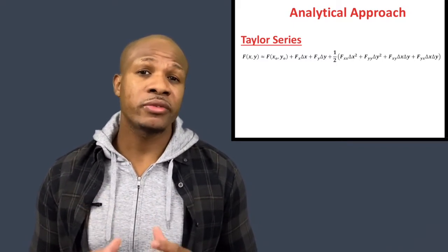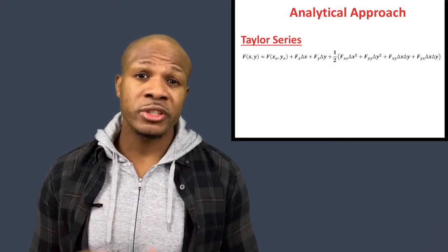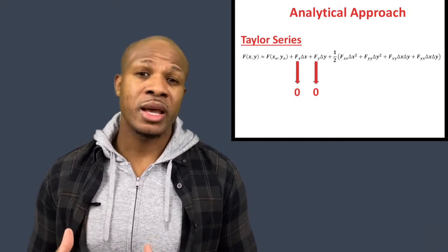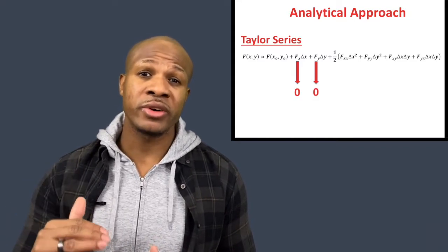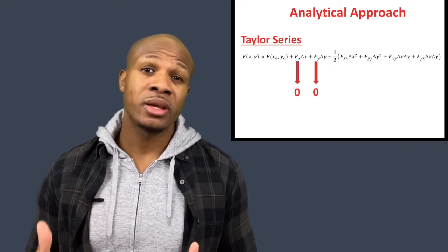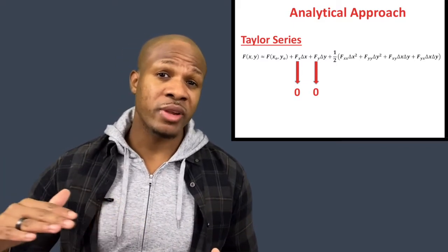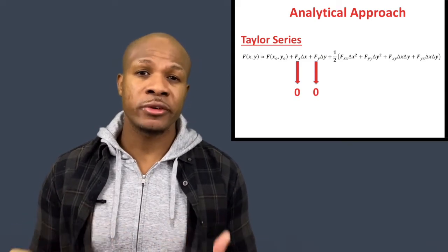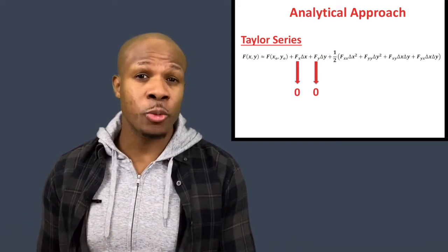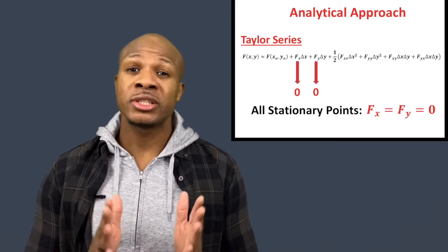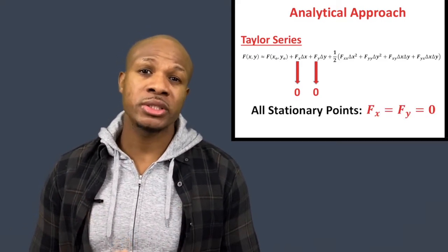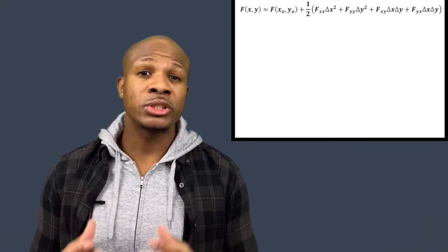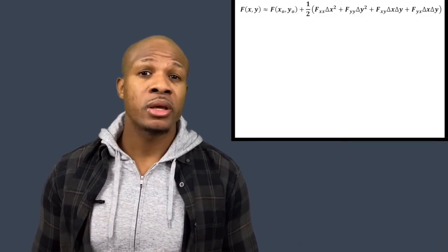When looking at the Taylor series for a stationary point, the first thing you want is for the first-order derivatives to vanish. The first-order derivatives are the main approximation of what the slope of the function looks like at that point, and if you're at a stationary point then the slope should look relatively flat. A flat slope means a derivative equal to zero — so the first condition for stationary points is that all first-order derivatives equal zero.